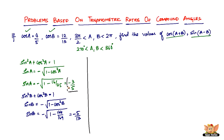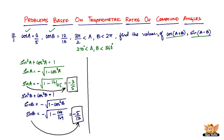So sine a = −3/5 and sine b = −5/13. Now all we have to do is substitute the values to find cos(a + b).